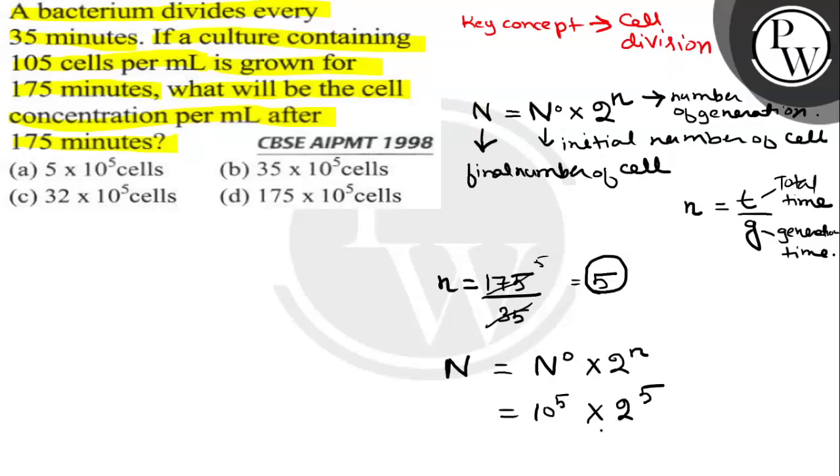Option C, because 2 to the power 5 comes out to be 32 into 10 to the power 5. So the correct option is option C. I hope you understood it well. All the best.